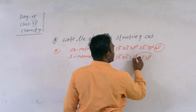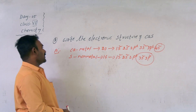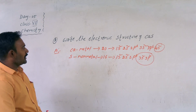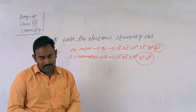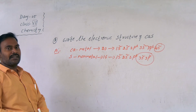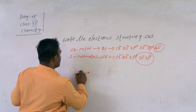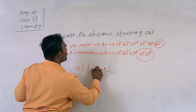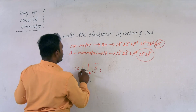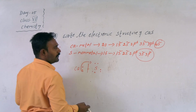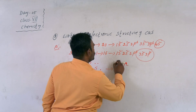Calcium has 2 electrons in the outermost shell and sulfur has 6 electrons in the outermost shell. Because of its metallic character, calcium loses 2 electrons to achieve octet configuration, and sulfur gains 2 electrons from calcium to complete its octet. Calcium has 2 valence electrons and sulfur has 6 valence electrons. Calcium donates 2 electrons to sulfur, becoming Ca²⁺.